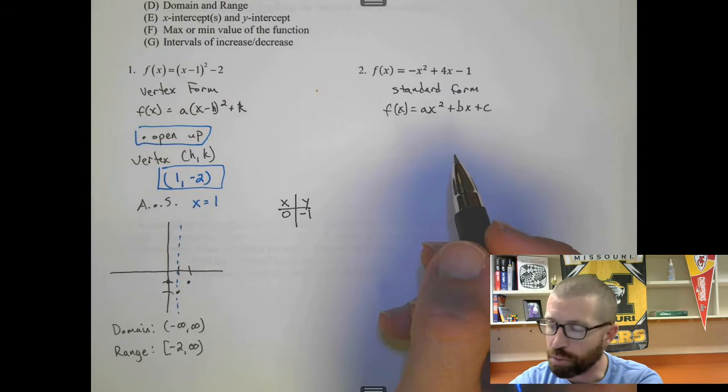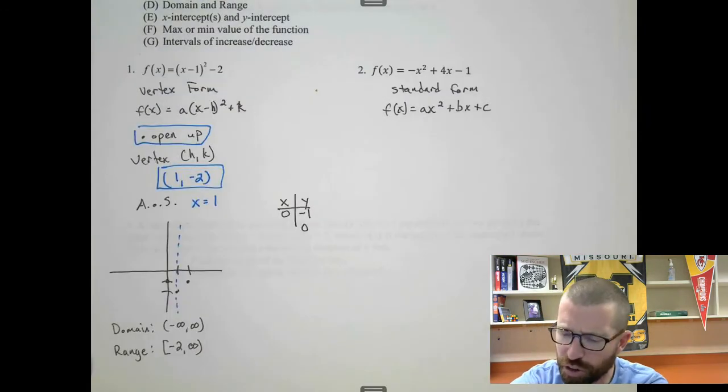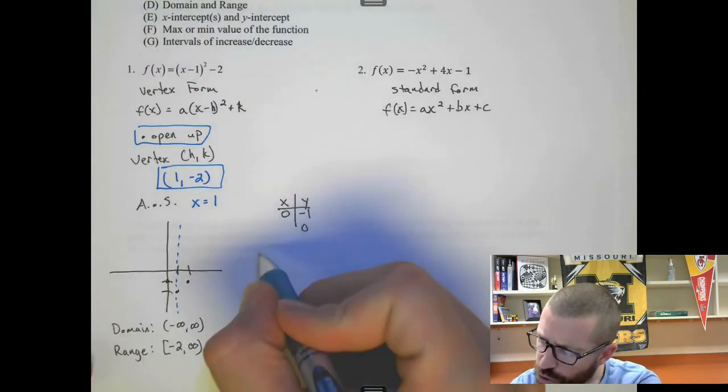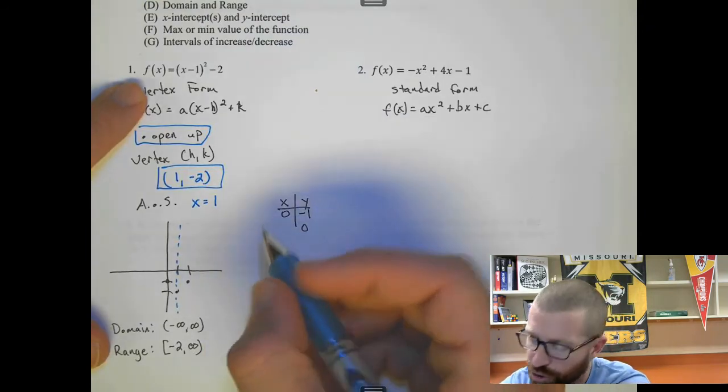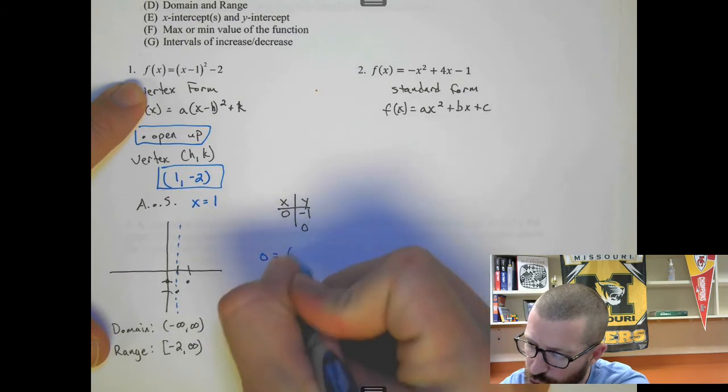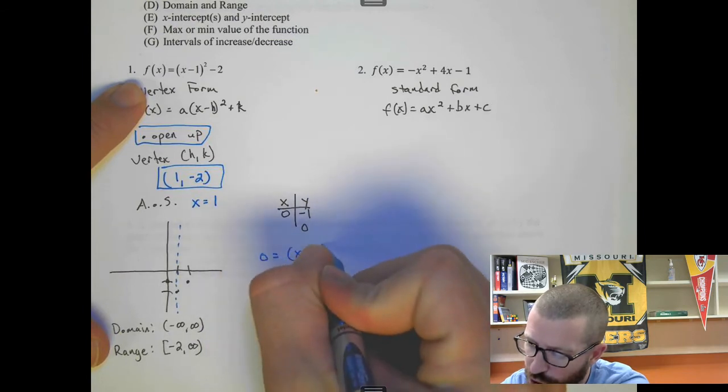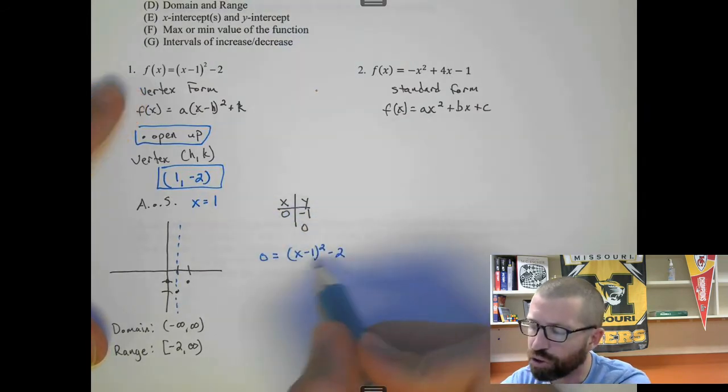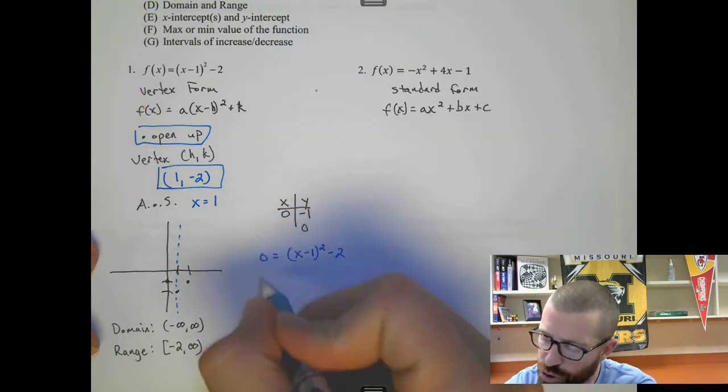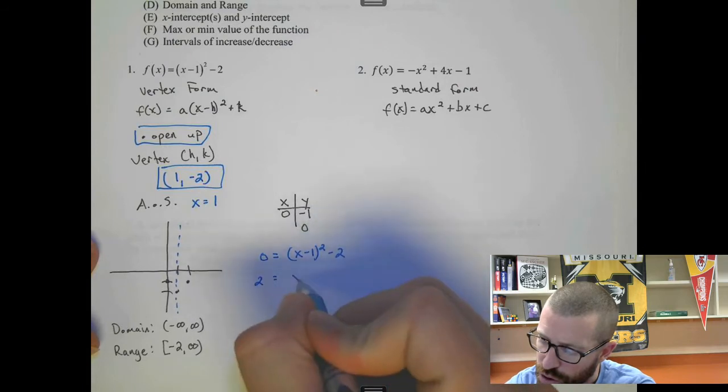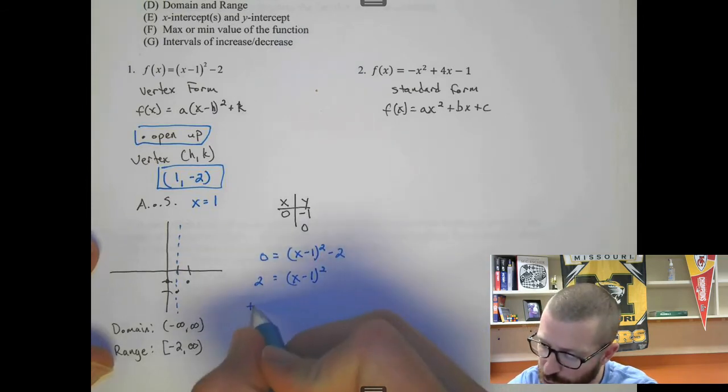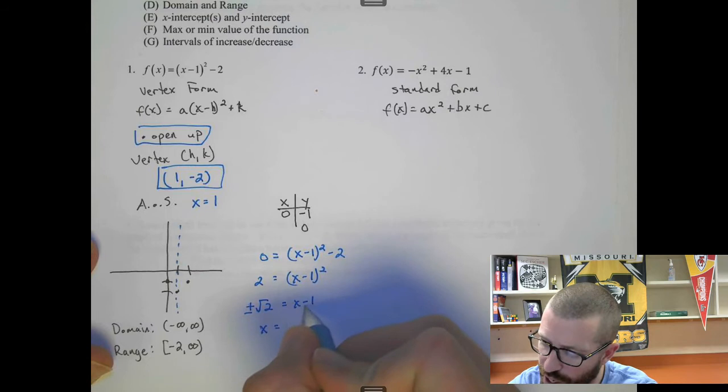That was the y intercept. For the x intercept, we plug in 0 for y. So if I plug in 0 for f(x), I get 0 = (x - 1)² - 2. So we need to solve for x. So I add 2, and then I square root both sides, and when you square root, you have plus or minus. So it's ± √2. x minus 1. And I'm going to move the x over here. So x = 1 ± √2.